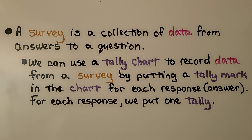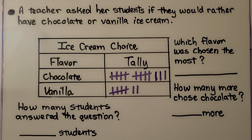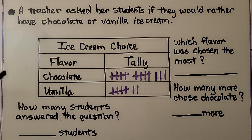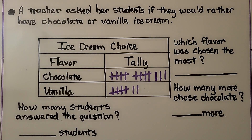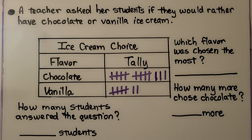A survey is a collection of data from answers to a question. We can use a tally chart to record data from a survey by putting a tally mark in the chart for each response — that's an answer. A teacher asked her students if they would rather have chocolate or vanilla ice cream. The data is put into a tally chart showing tallies for chocolate and vanilla.